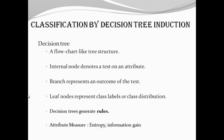Classification by Decision Tree Induction. Decision Tree is a flowchart-like structure. Internal nodes denote a test on an attribute. Branches represent outcomes of tests. Decision Tree Induction generates rules. Attribute measures mainly include entropy and information gain.